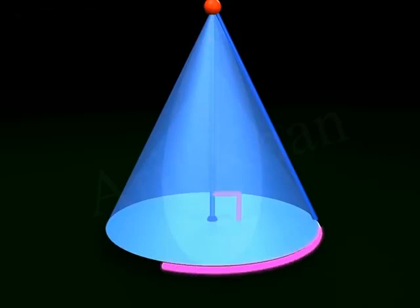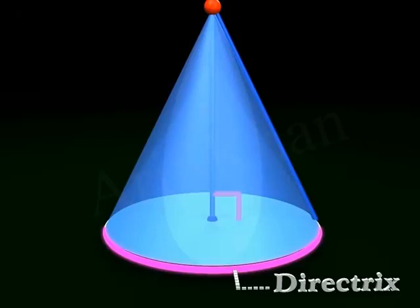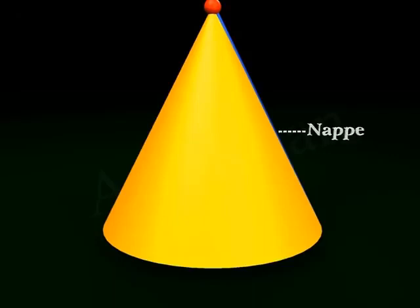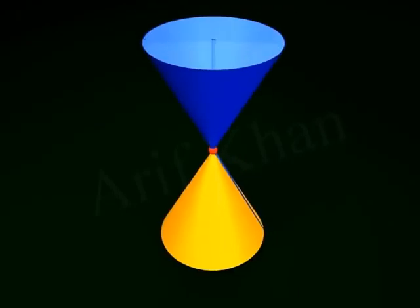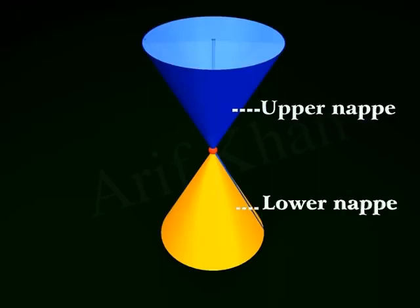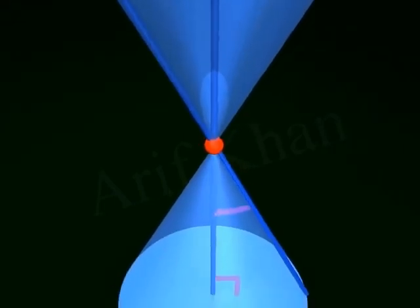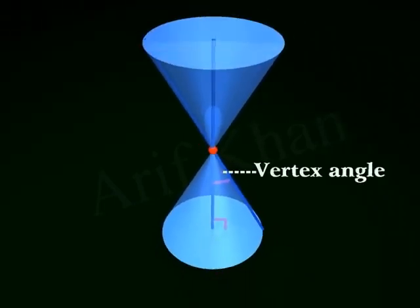The perimeter of the base is called the directrix. The lateral surface of a right circular cone is called a nap. A double right circular cone has two naps — the nap above the vertex is called the upper nap and that below the vertex is called the lower nap. The angle between the generator and the axis is called the vertex angle.